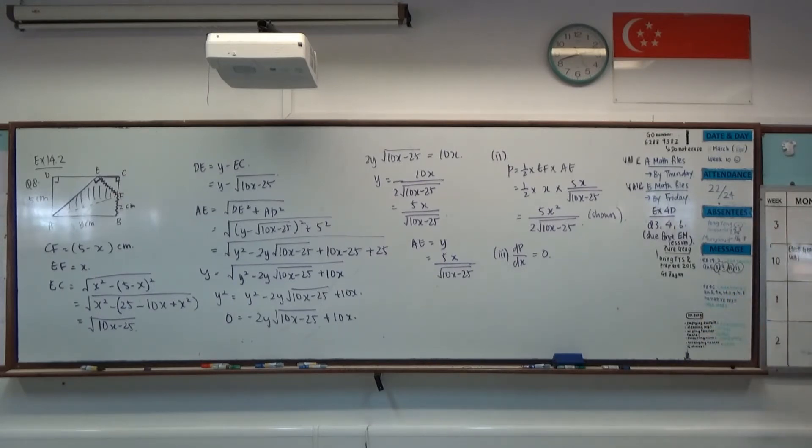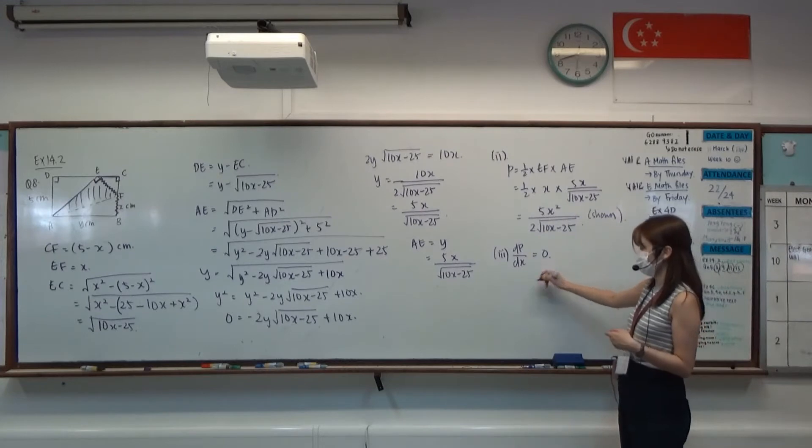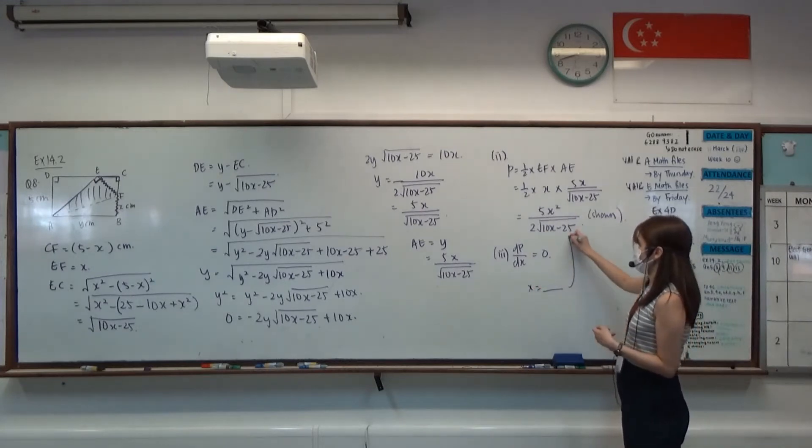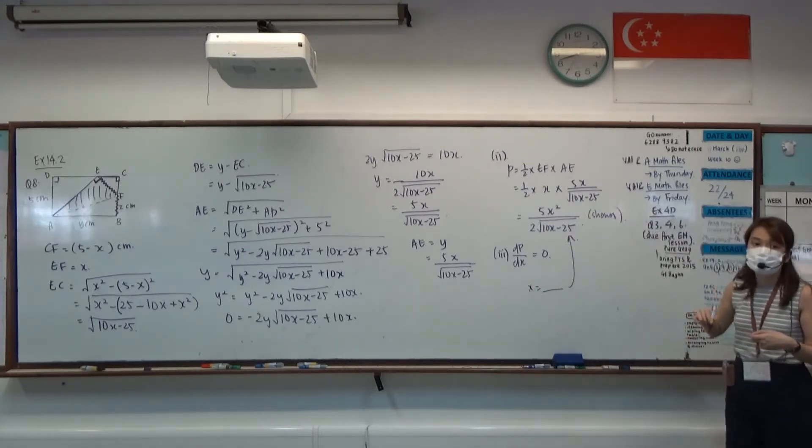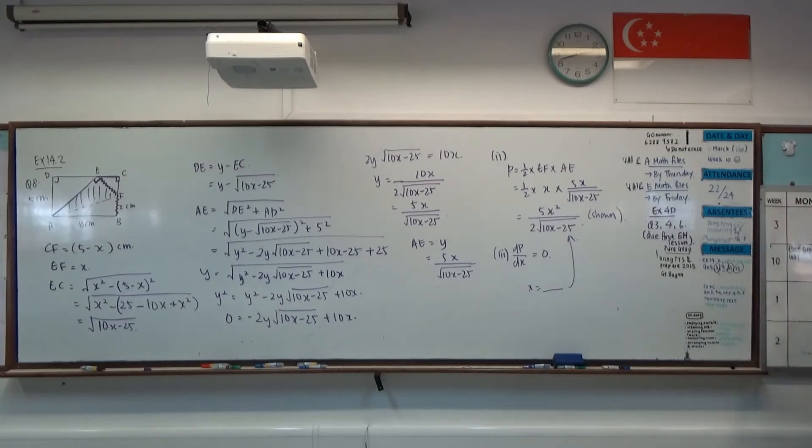Then in part 4, we want to find the minimum value of P in certain form. So that means we take our answer in part 3, the X value, substitute it here, and then we will get the minimum P value.